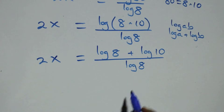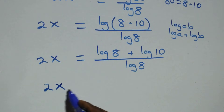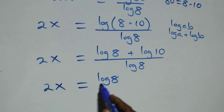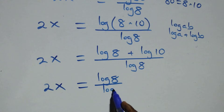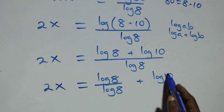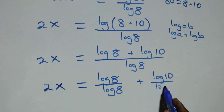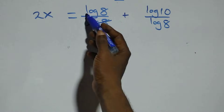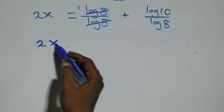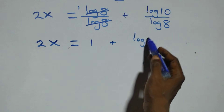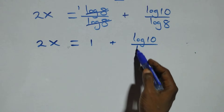Here we have log 8 plus log 10 over log 8. Then log 8 over log 8 cancels, leaving 1 here, which implies 2x equals to 1 plus log 10 over log 8.